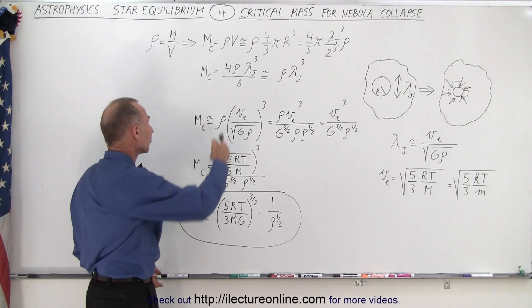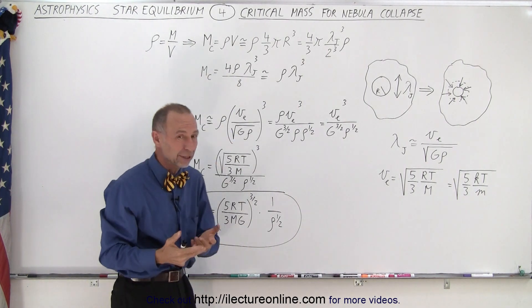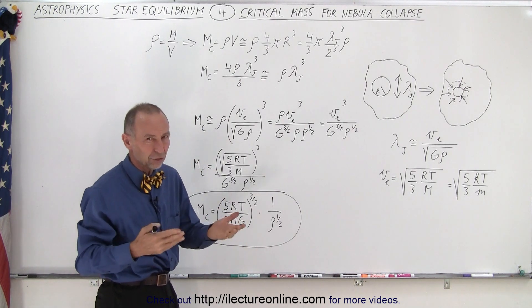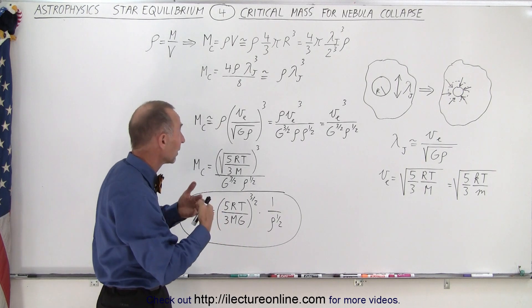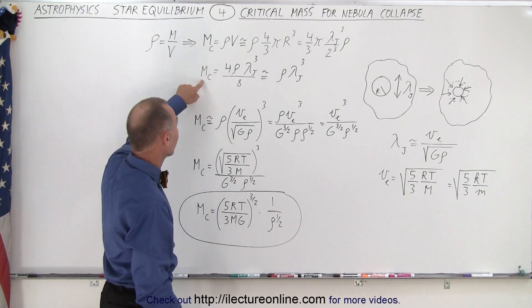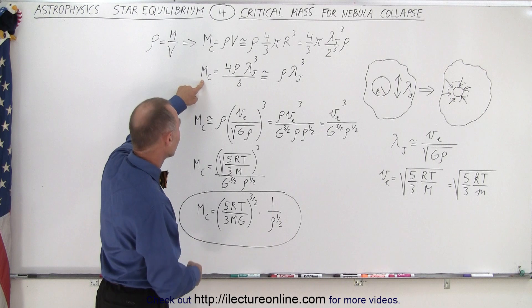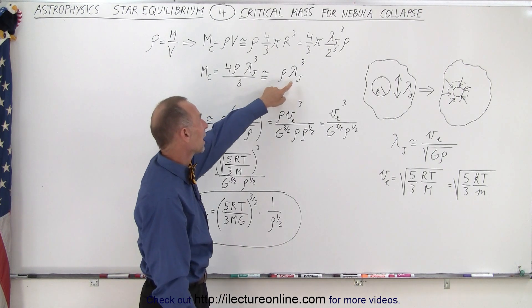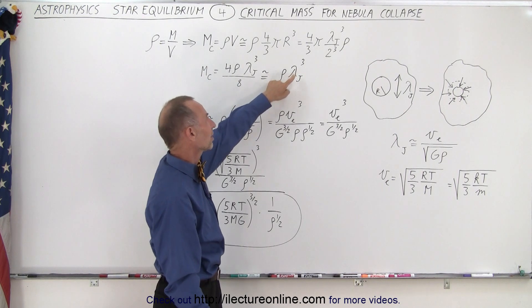And then we can say that 4 and 8 are approximately equal—it's only a half. And we want to make sure that we have at least enough of the critical mass. So we can go ahead and replace 4 over 8 by 1 as well. And so for simplicity, we can say that the critical mass required should be at least the density times Jeans length cubed.